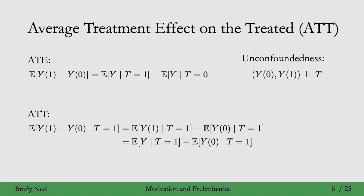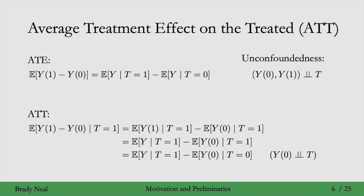But the second term is counterfactual — the potential outcome Y0 doesn't match T equals 1, so it's counterfactual. Here's where we need to use our weaker unconfoundedness assumption. Because Y0 is independent of treatment, we can change the conditioning to T equals 0, and then use consistency again to identify this last term. And that completes the proof.